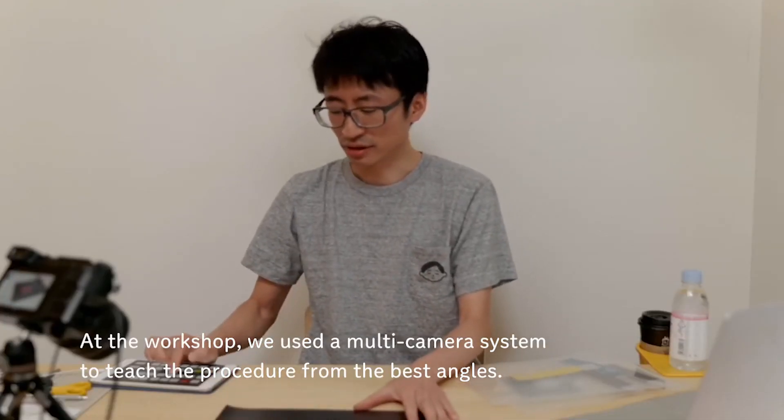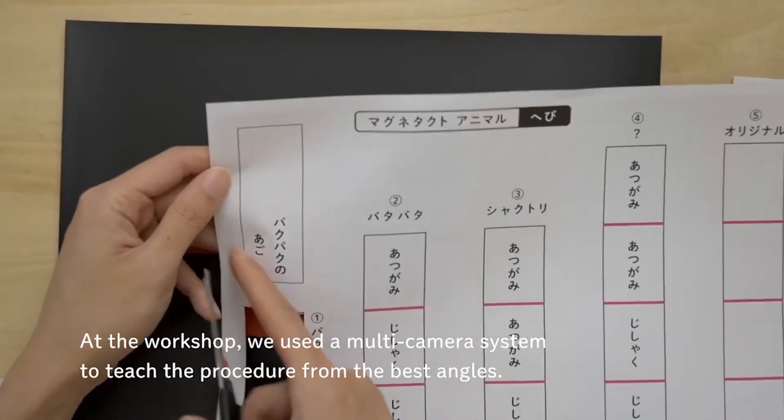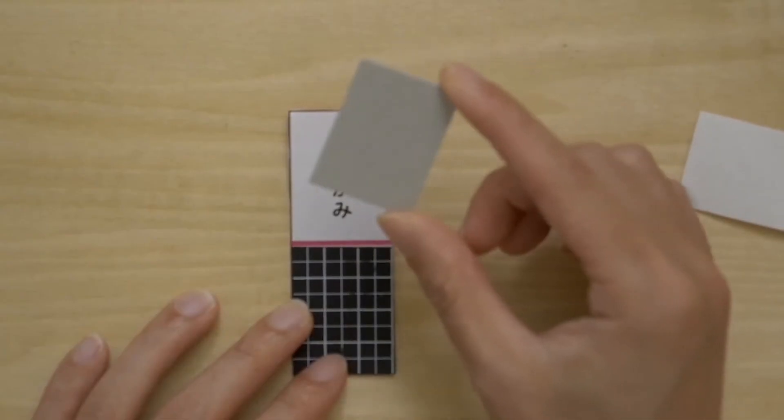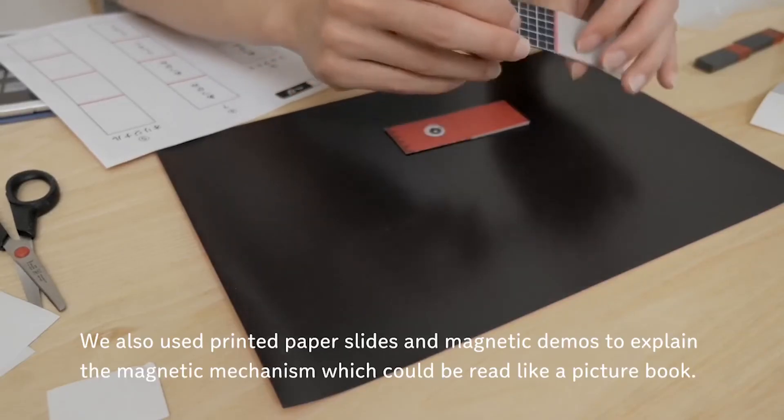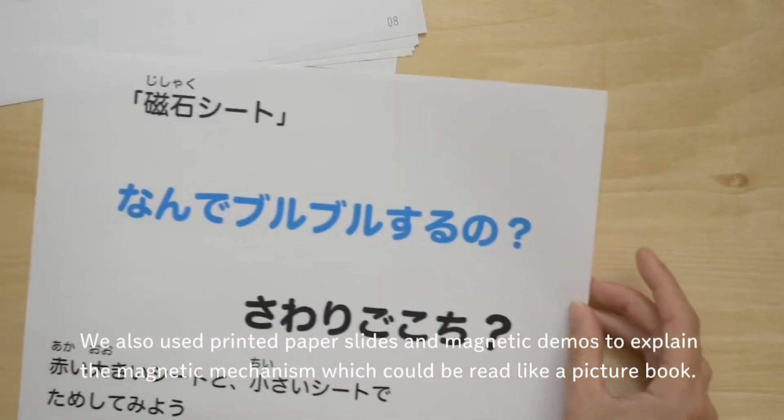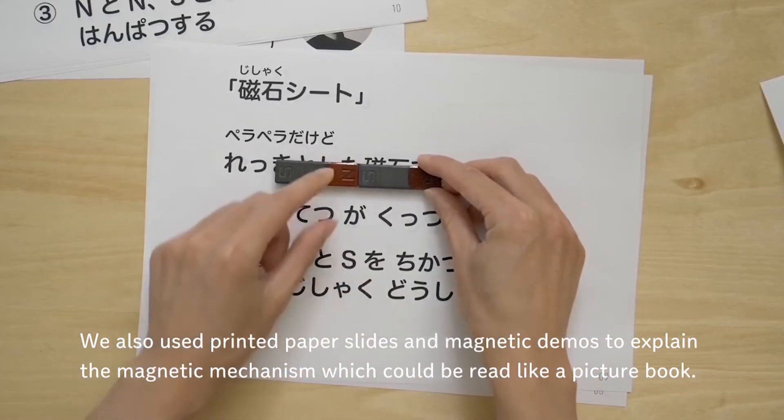At the workshop, we used a multi-camera system to teach the procedure from the best angles. We also used printed paper slides and magnetic demos to explain the magnetic mechanism, which could be read like a picture book.